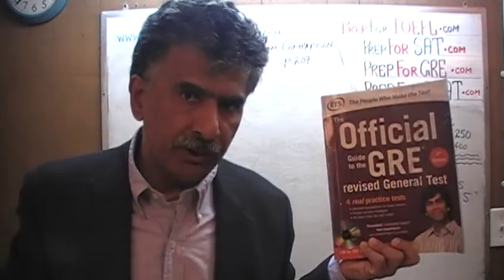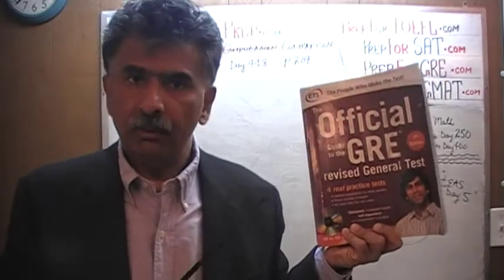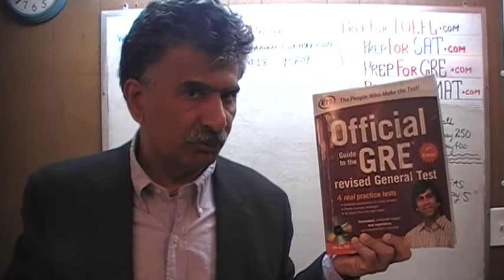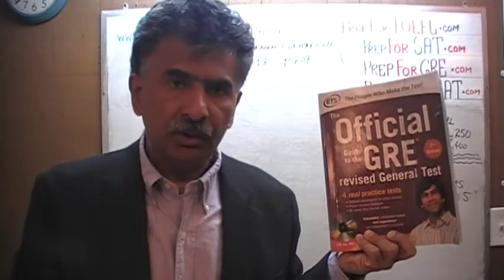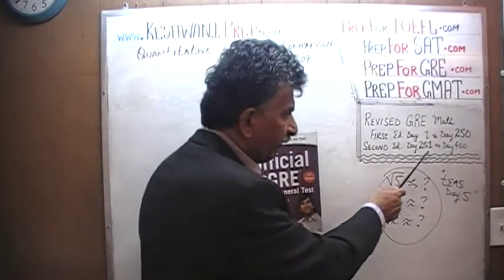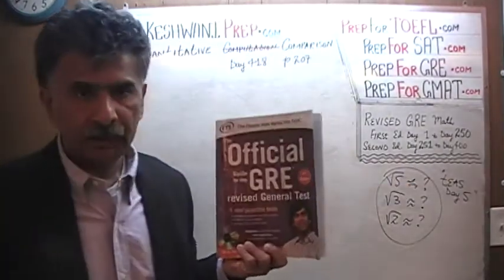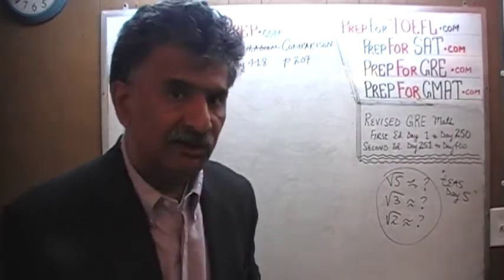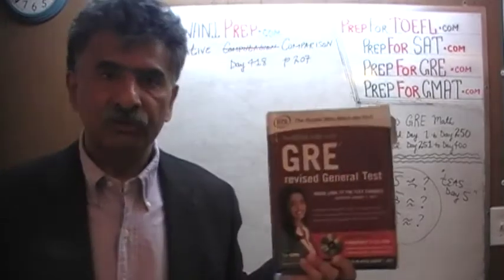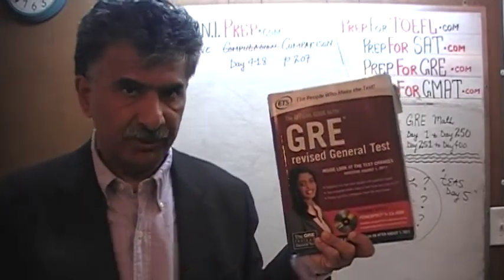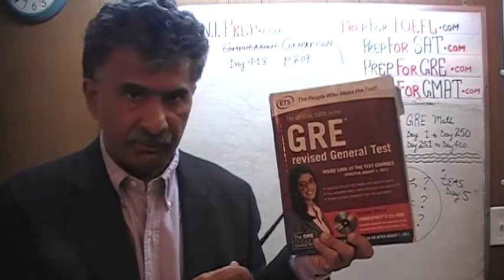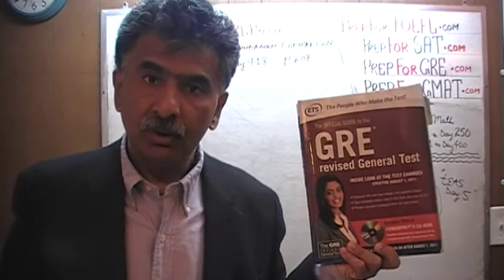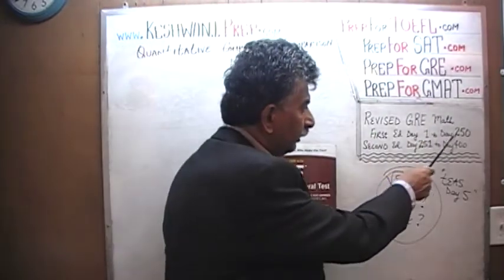If you do not own this book already, purchase it immediately — you are going to need it. We are almost finished solving all the problems from this book. If you are interested in watching the solutions to any of the math problems, you will find the solutions from day number 251 through 400. This book contains almost all the same problems, in most cases on the same page numbers, as those in the first edition of the revised GRE. We have finished every single math problem from here; the original solutions are from day number 1 through 250.